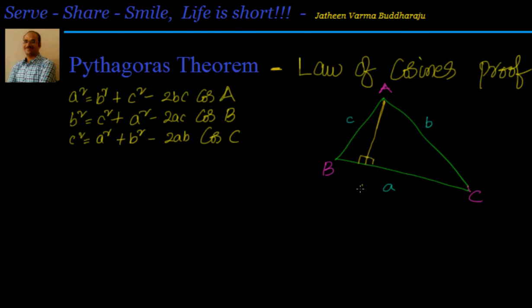So let us say A is divided into two parts. One is x and another is a minus x. Okay, right. Now we don't know this altitude, so I will call it as h.